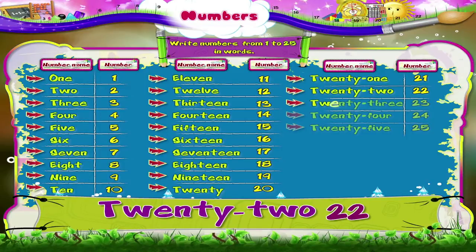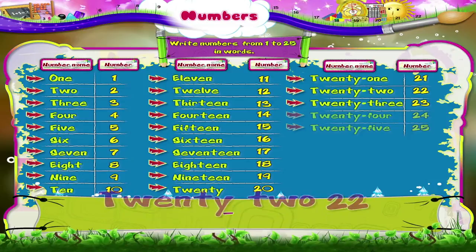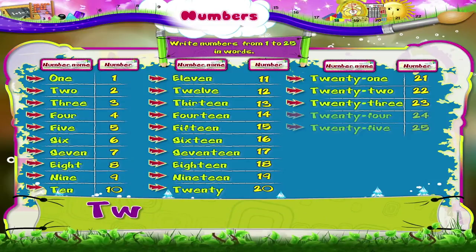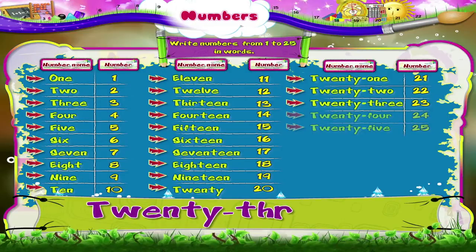T-W-E-N-T-Y 20, T-H-R-E-E 3 — 23. T-W-E-N-T-Y 20, T-H-R-E-E 3 — 23. T-W-E-N-T-Y 20, T-H-R-E-E 3 — 23.